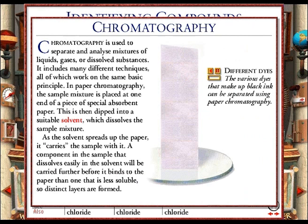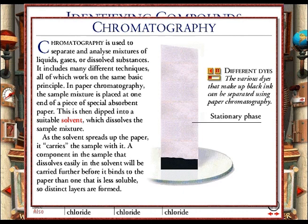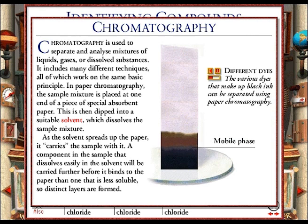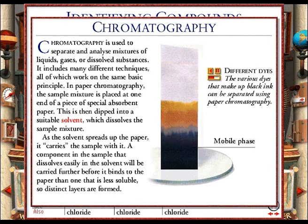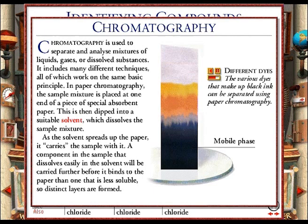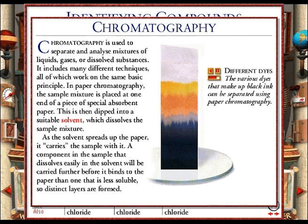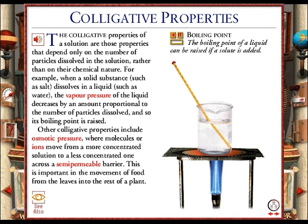Paper chromatography can be used to separate the components in a mixture such as black ink. The ink is placed on a piece of chromatography paper. This is called the stationary phase. One end of the paper is then dipped in water. This acts as a solvent and is called the mobile phase because it carries the ink up the paper. A component of the ink that dissolves readily in water will be carried further before it is absorbed by the paper than one that is less soluble. Because the components are absorbed to differing degrees as they are carried along, they become separated and form distinct layers on the paper. These layers can be analyzed to determine the exact components of the ink.